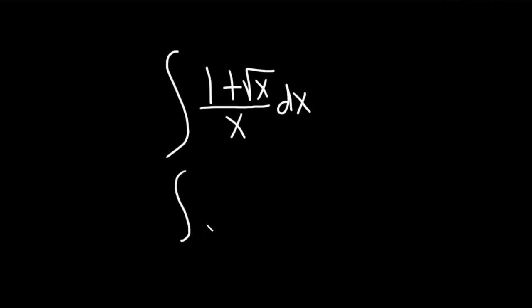So this is the integral of 1 over x plus the square root of x over x. Square root of x over x in parentheses, and then the dx.